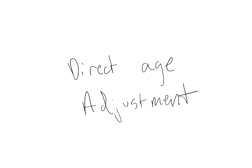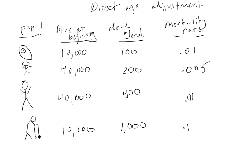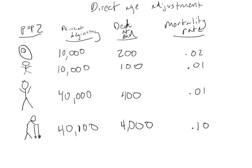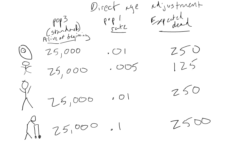The first technique is called direct age adjustment. The first step is to split up each population into different age groups, then to calculate the mortality rate for each of the age groups, as shown here for population 1. This slide shows the mortality rates for each age group in population 2. For direct age adjustment, we then apply the age-specific mortality rates from our two populations to the age distribution of a third standard population.